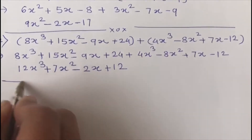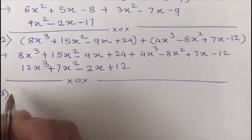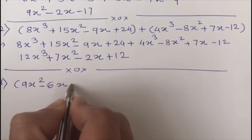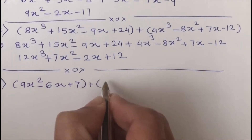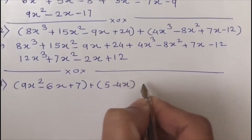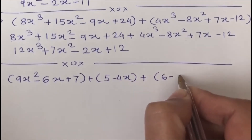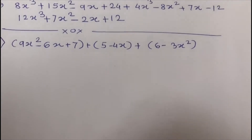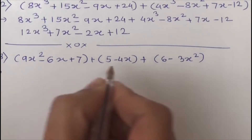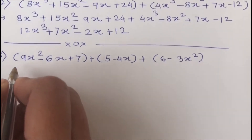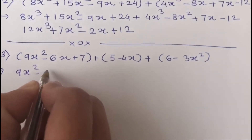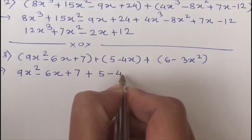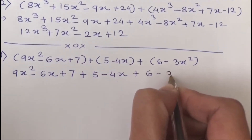Let's take the next example. Here three polynomials are given: 9x squared minus 6x plus 7, in another bracket 5 minus 4x, and plus 6 minus 3x squared. We have to add all three. First, I write all these polynomials without brackets: 9x squared minus 6x plus 7 plus 5 minus 4x plus 6 minus 3x squared.